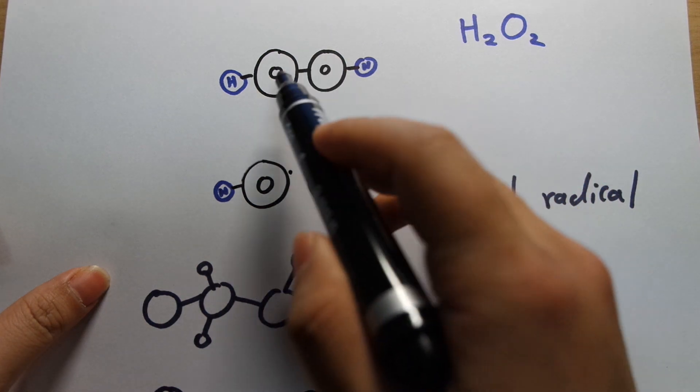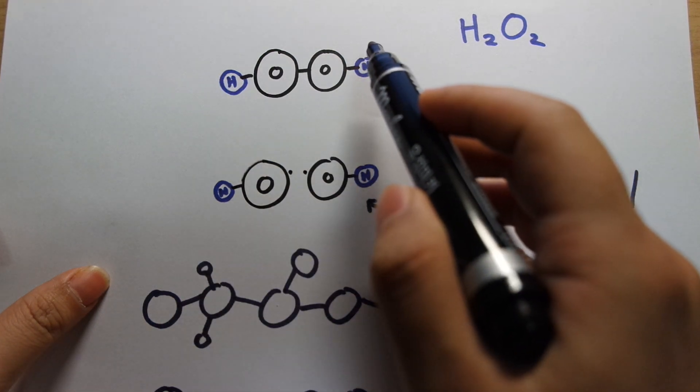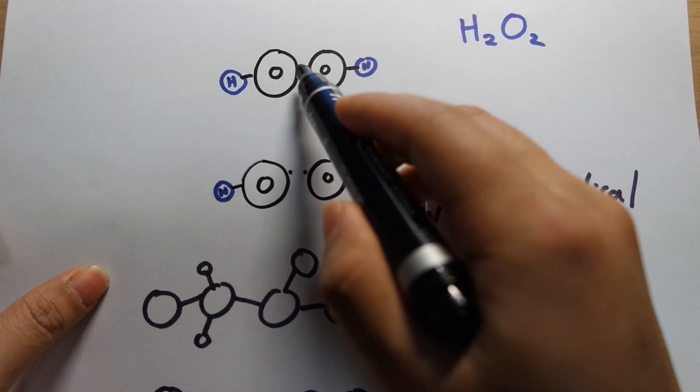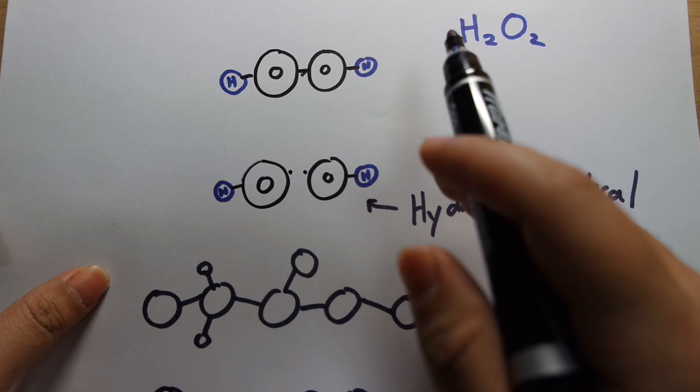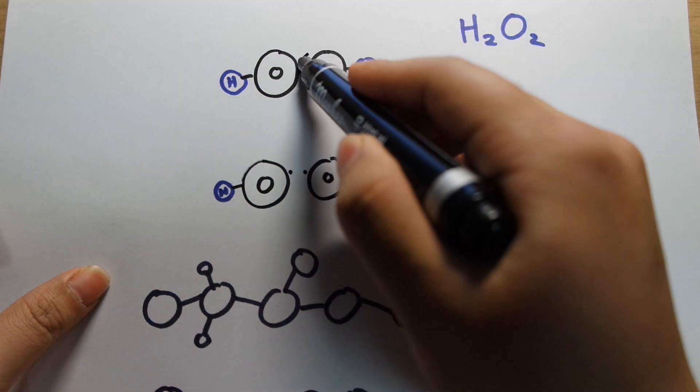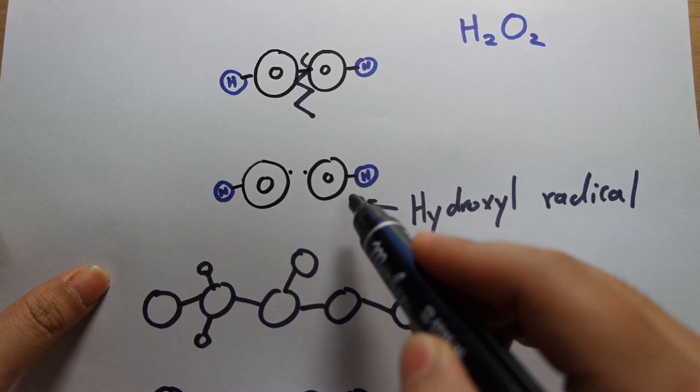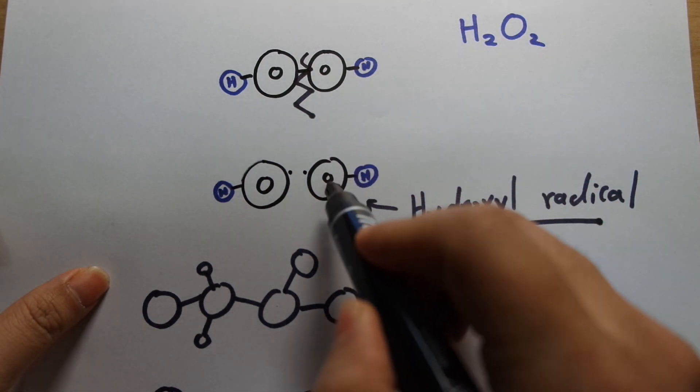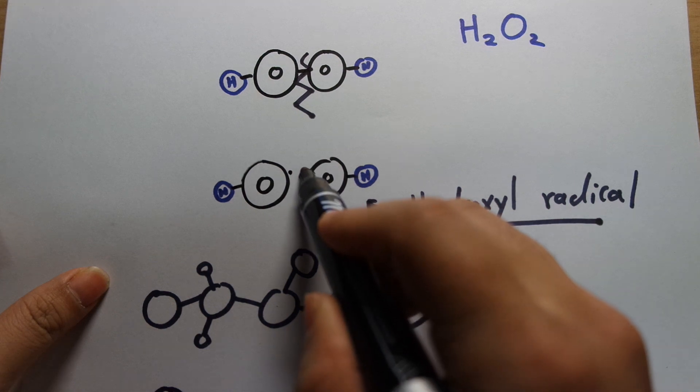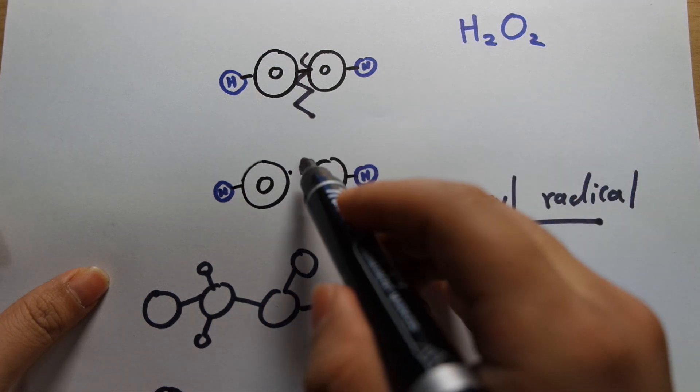So there's two oxygens and two hydrogens. And what happens to hydrogen peroxide is this bond here, right there, is very vulnerable to breaking. So when this breaks apart right here, it becomes a hydroxyl radical. So basically it's oxygen and hydrogen, and a free electron that used to form the bond.